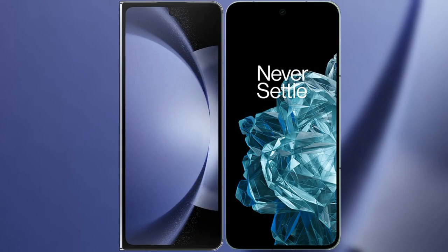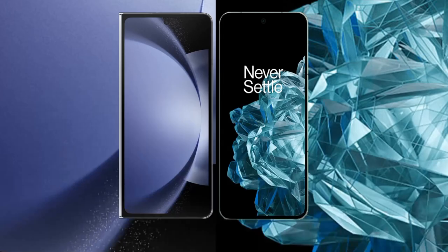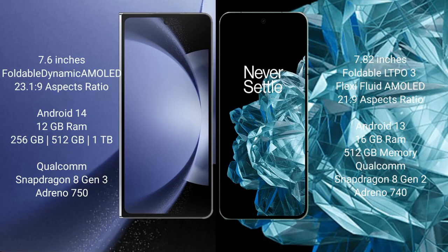I will compare the new Samsung Galaxy Z Fold 6 with OnePlus Open. Samsung Galaxy Z Fold 6 comes with a 7.6-inch foldable Dynamic AMOLED display. OnePlus Open features a 7.82-inch foldable LTPO3 AMOLED display.